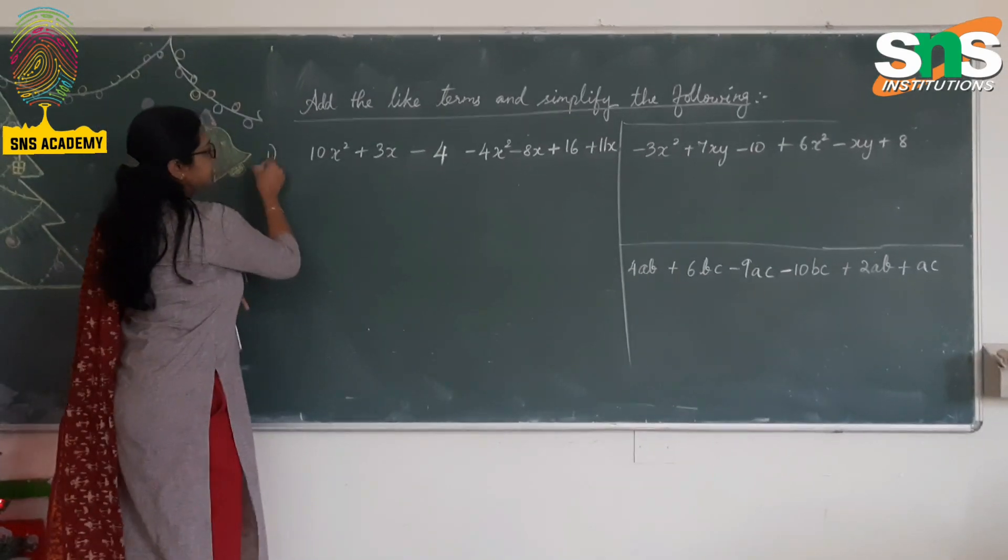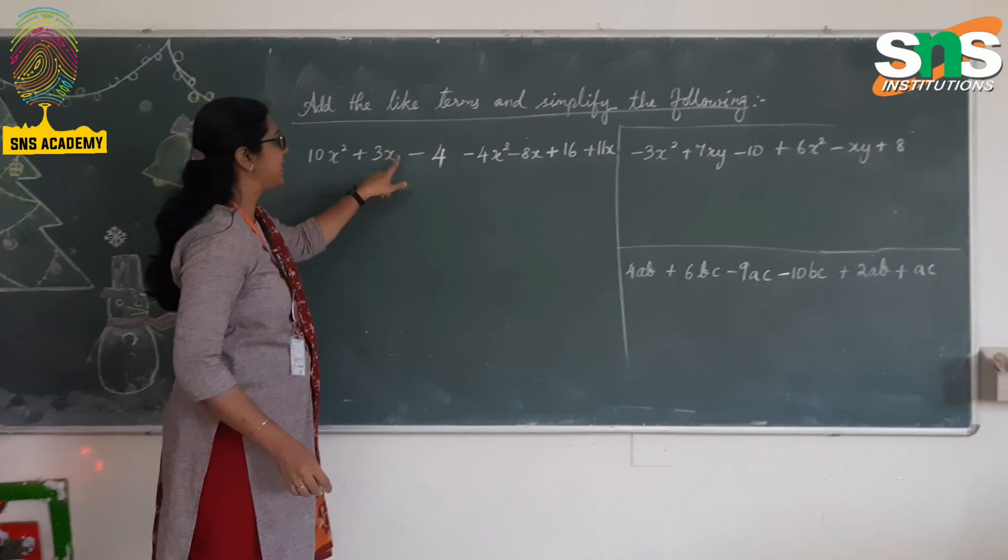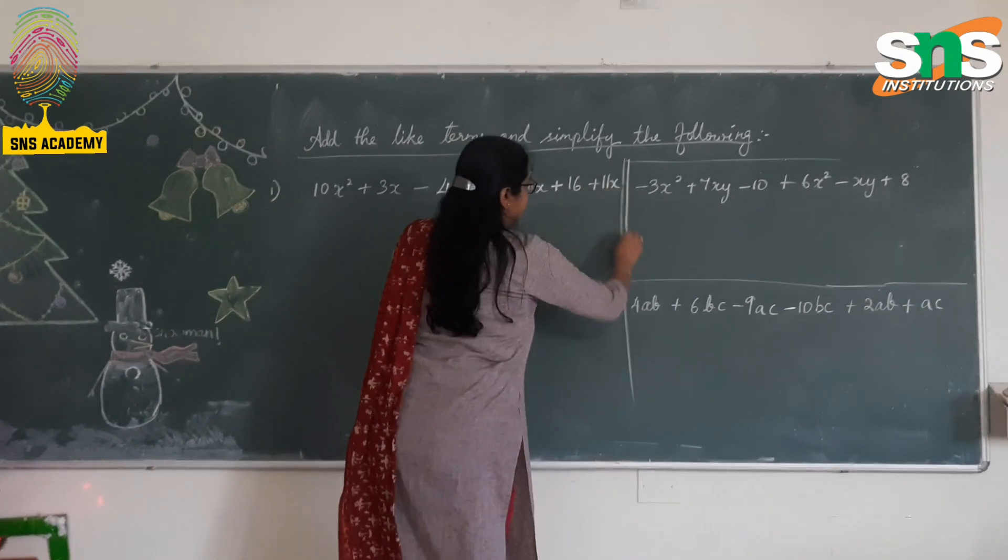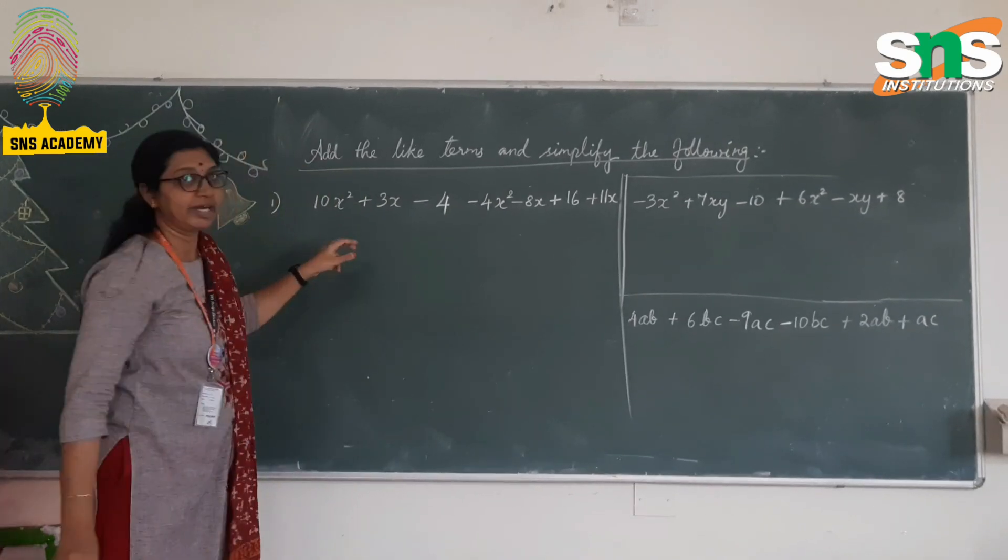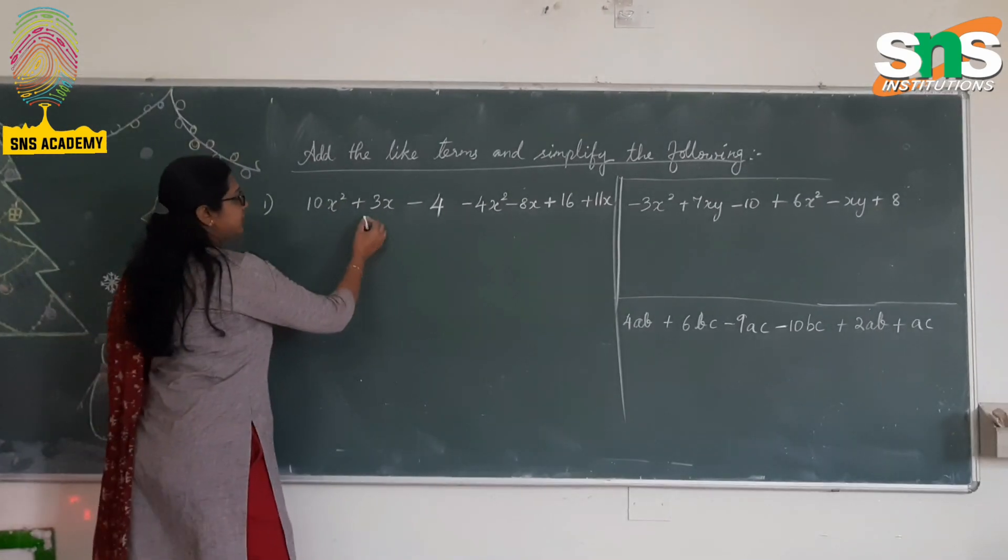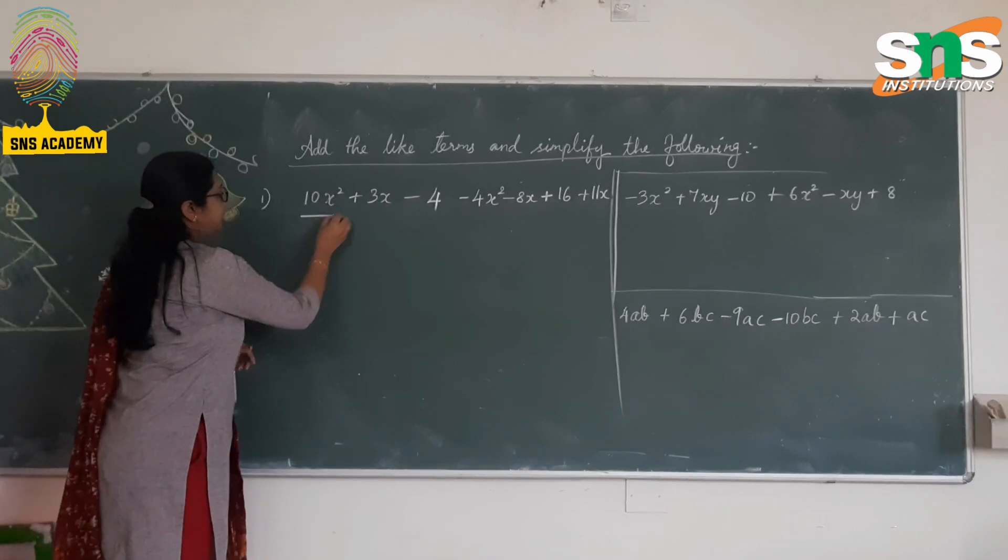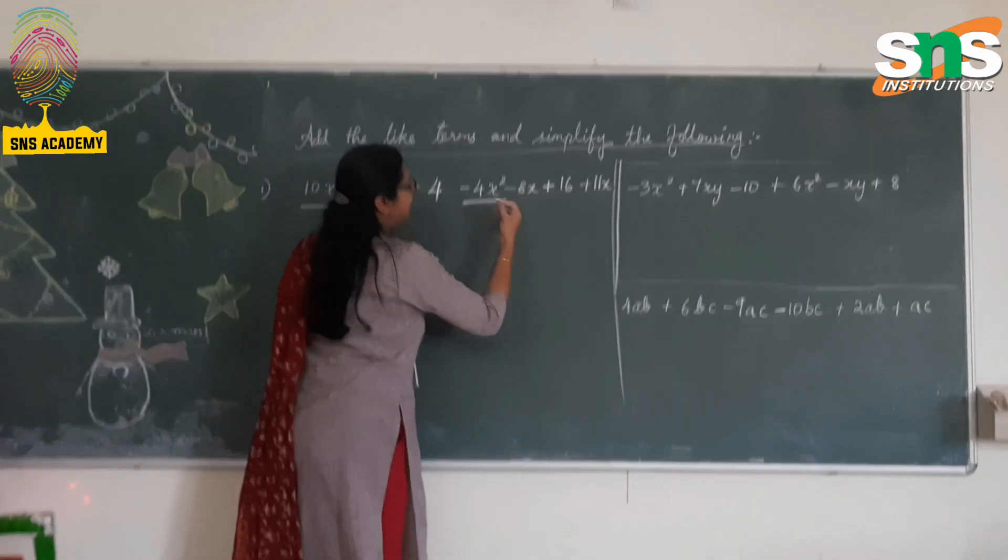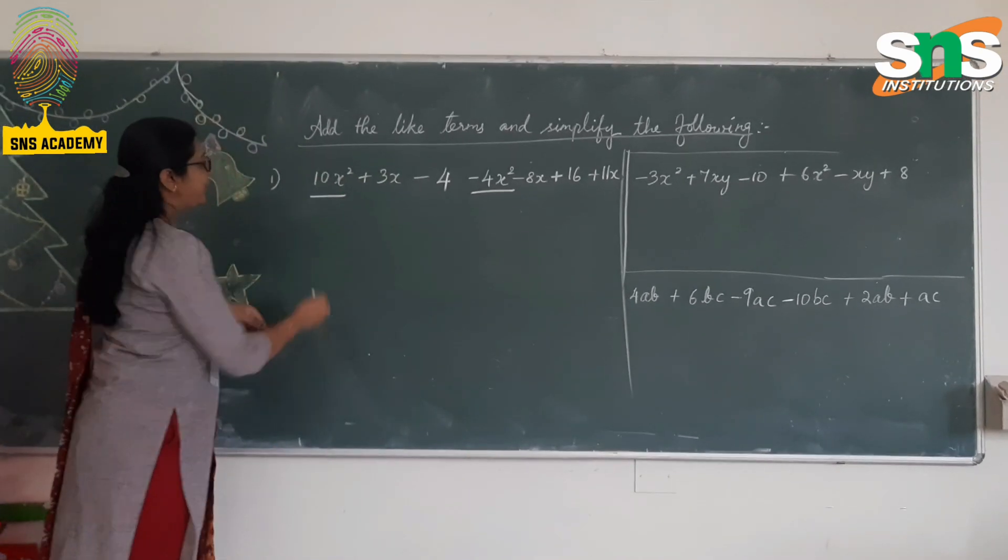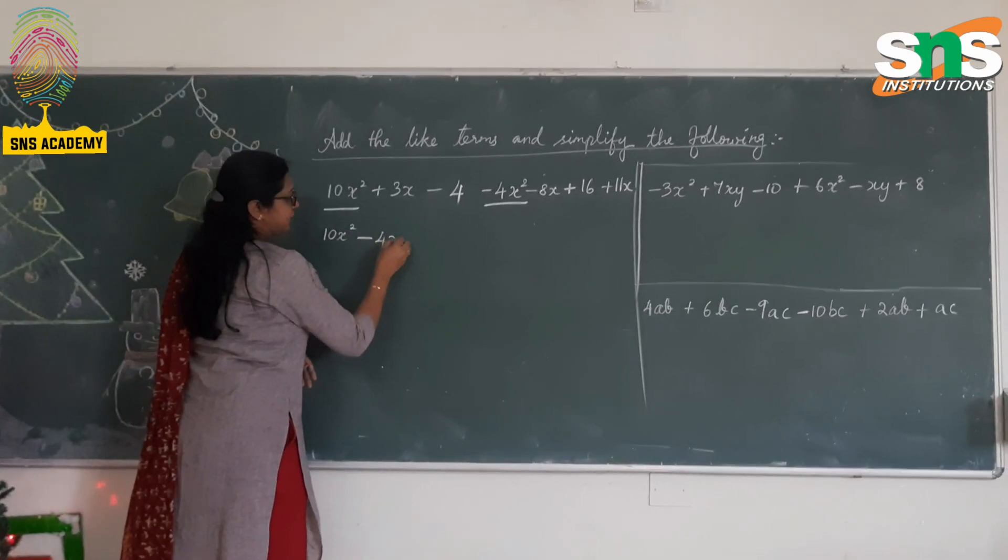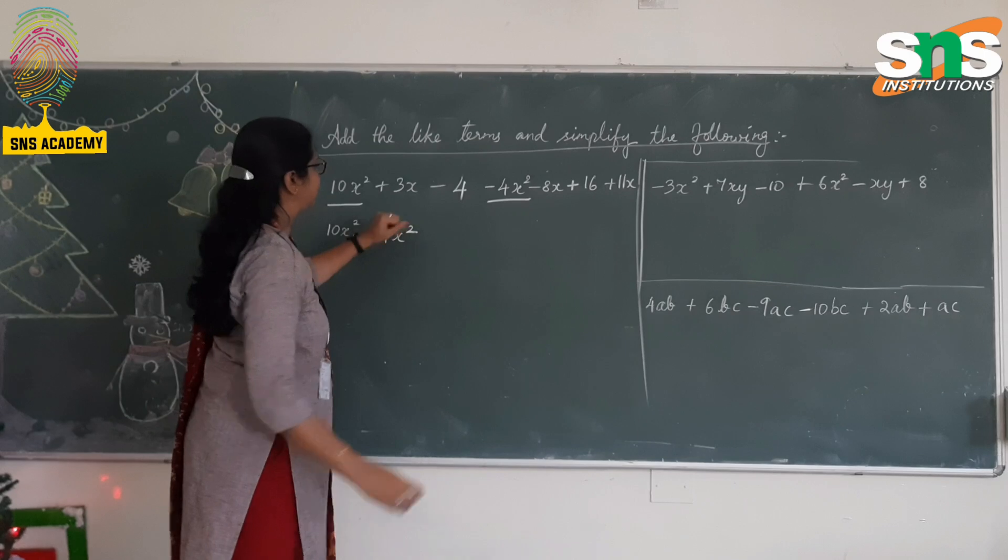In this first question which is 10x² + 3x - 4 - 4x² - 8x + 6 + 11x, we are going to identify the like terms. Like terms here, first we will check with the degree 2. So 10x² - 4x².